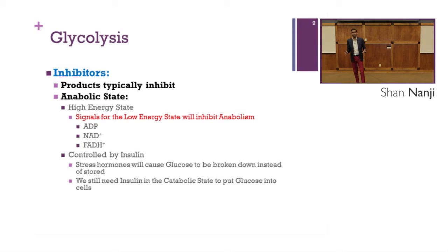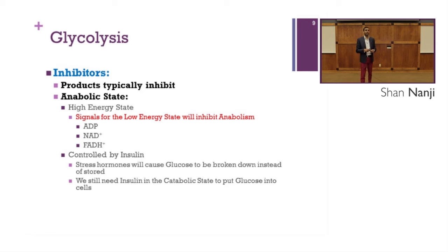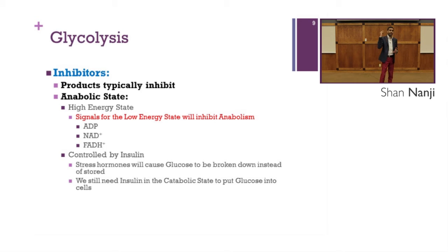We will discuss the activators and inhibitors of each pathway in detail when the rate-limiting enzyme for that pathway is discussed. These slides provide concepts to fall back on if you can't identify the exact substance. For anabolic state inhibitors: signals of a low energy state inhibit anabolism — these are the same as the activators for the catabolic state: ADP, NAD, and FADH.